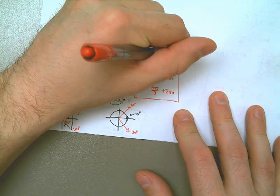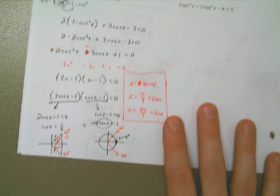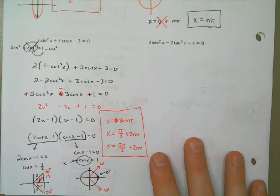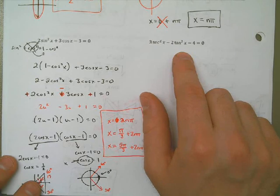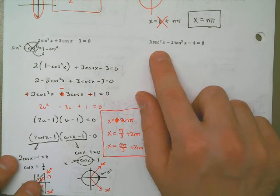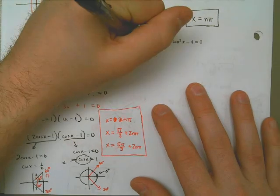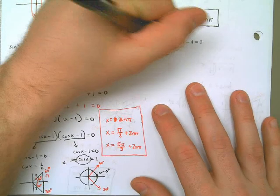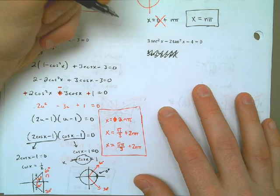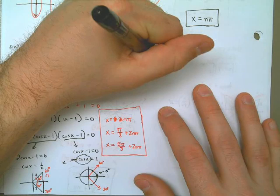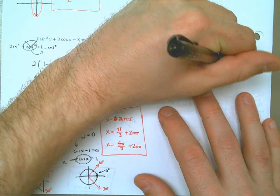Now I'll get started on a second similar example. I have secant squared and tangent squared, so I either need to turn everything into secant squared or everything into tangent squared — it doesn't matter which. I'll turn the secants into tangents. Since secant squared equals tangent squared plus 1, I'll replace secant squared with tangent squared x plus 1, and write the rest of the problem as given.